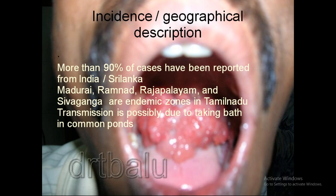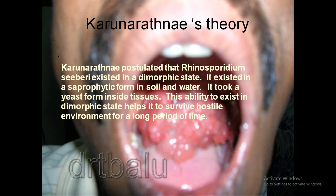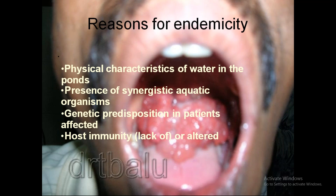More than 90% of cases have been reported from India and Sri Lanka, particularly Madurai and various zones of Tamil Nadu. Transmission is probably due to bathing in common ponds. The physical characteristics of water in the ponds, presence of synergistic aquatic organisms, and genetic predisposition in affected patients contribute to endemicity.